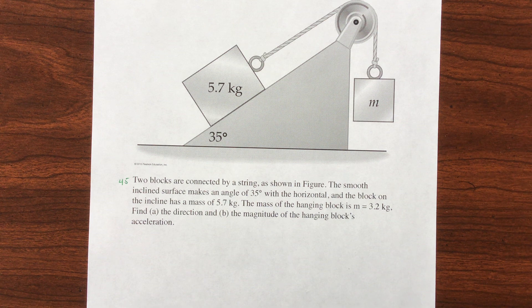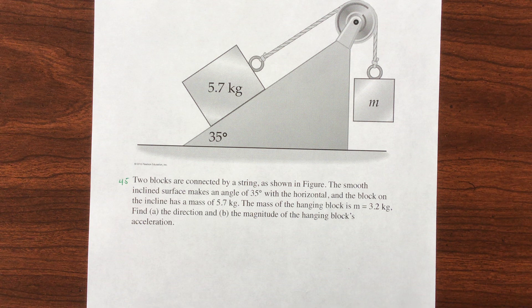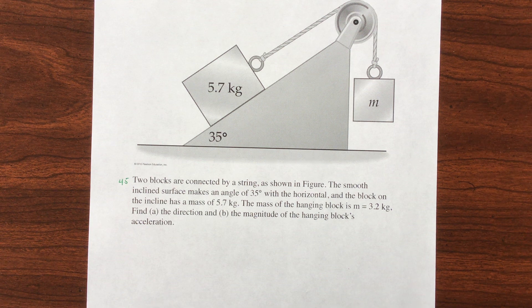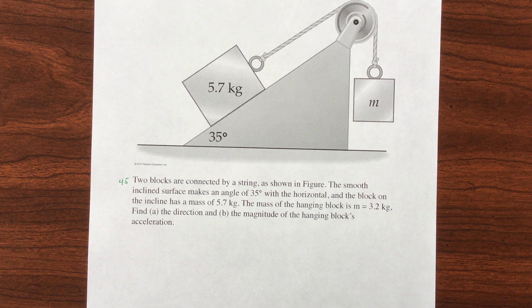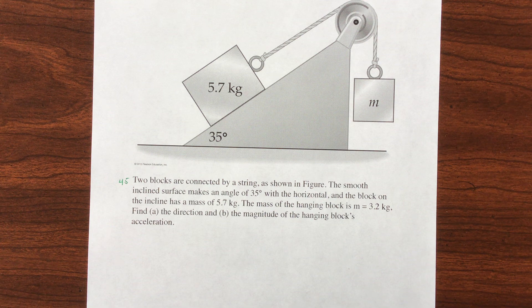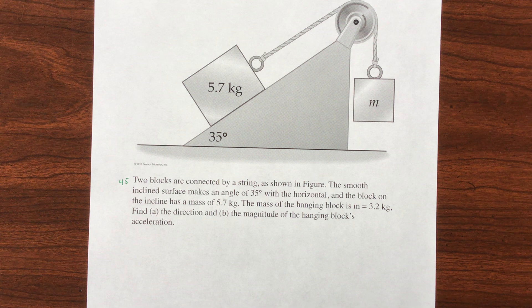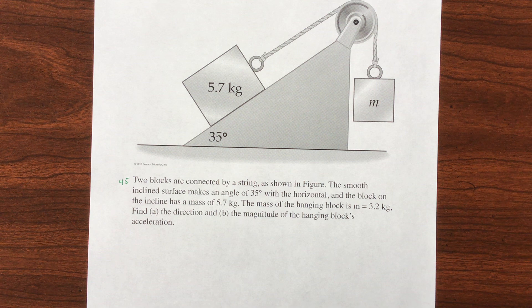Two blocks are connected by a string. The smooth incline surface makes an angle of 35 degrees with the horizontal. The block on the incline has a mass of 5.7 kilograms. The mass of the hanging block is 3.2 kilograms. Find the direction and the magnitude of the hanging block's acceleration.